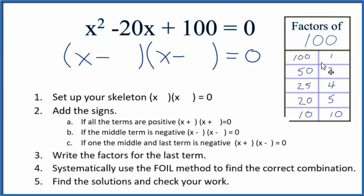The only thing that's going to add up here would be 10 and 10. So we could put 10 here and 10 here and this should be correct, but we can check that using the FOIL method.